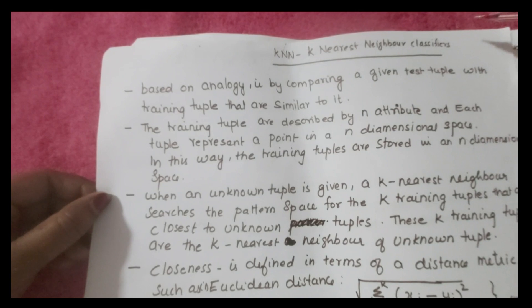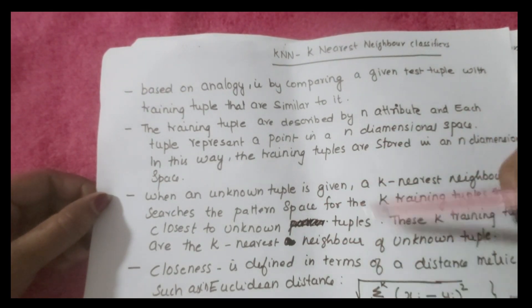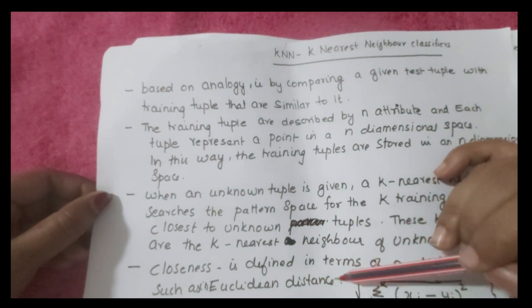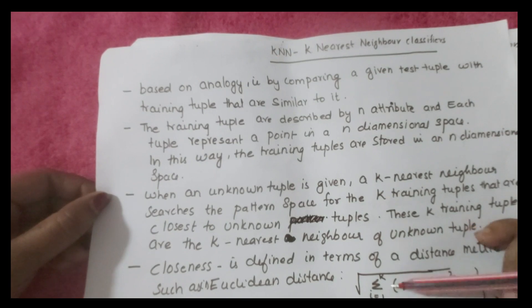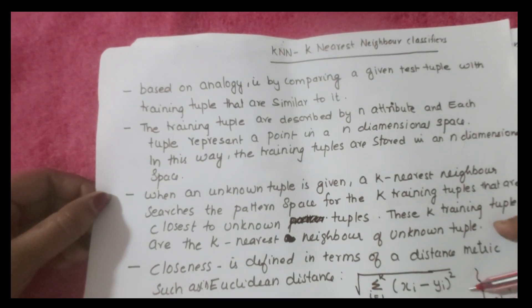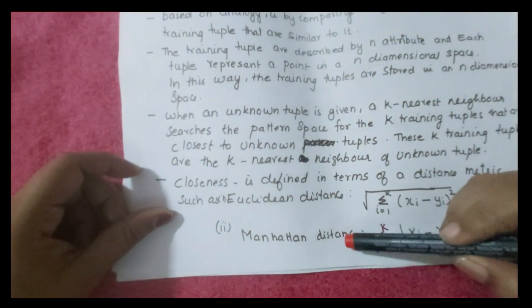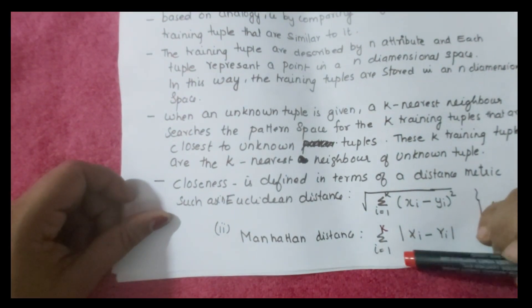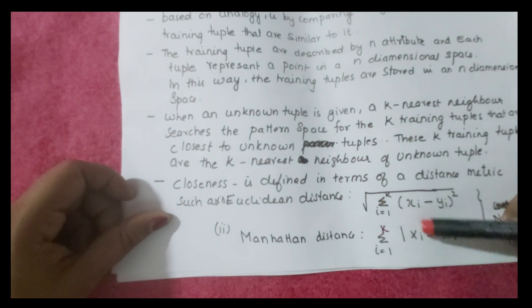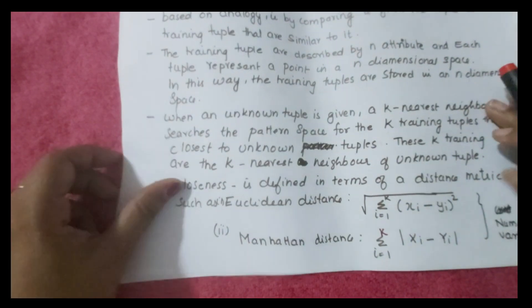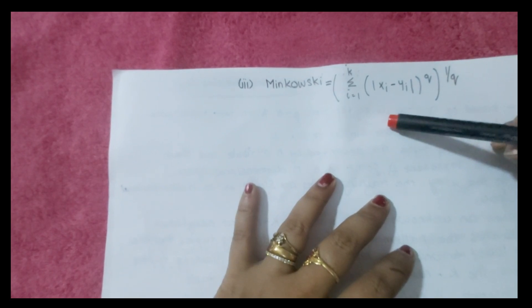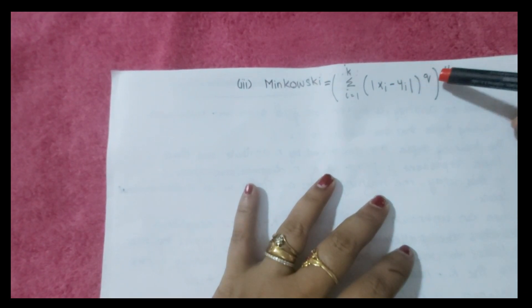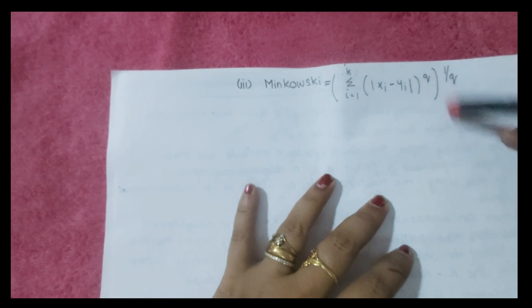There are different ways to compute distance metrics. First is Euclidean distance: √(Σᵢ₌₁ᵏ (xᵢ − yᵢ)²). Second is Manhattan distance: Σᵢ₌₁ᵏ |xᵢ − yᵢ|. Third is Minkowski distance: (Σᵢ₌₁ᵏ |xᵢ − yᵢ|^q)^(1/q). These three methods are used for finding the distance of numerical variables.